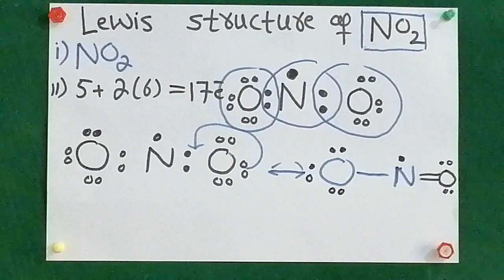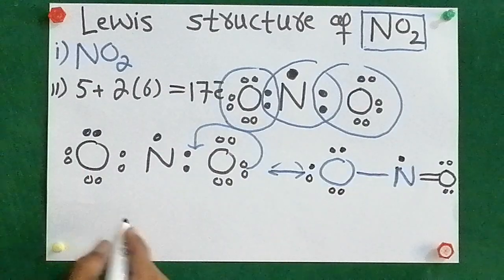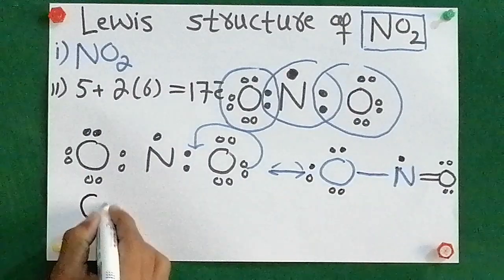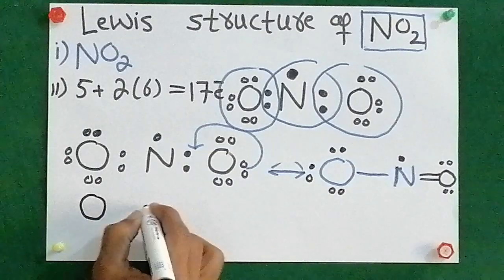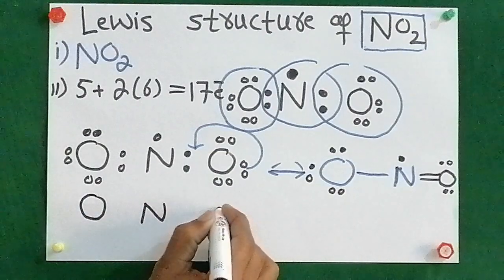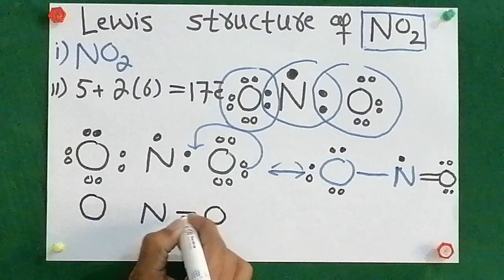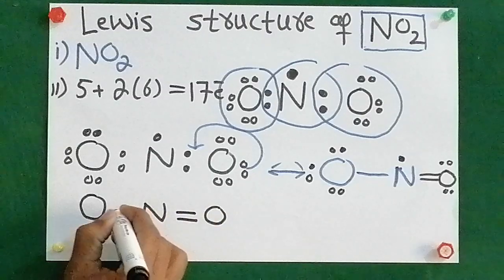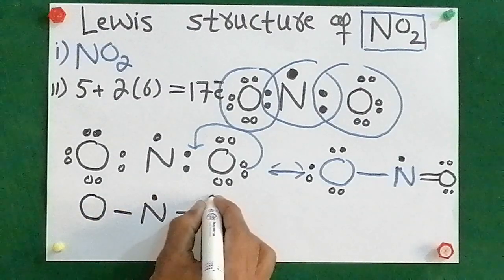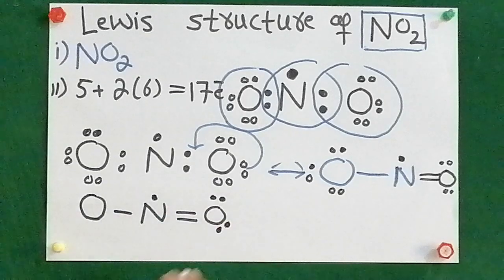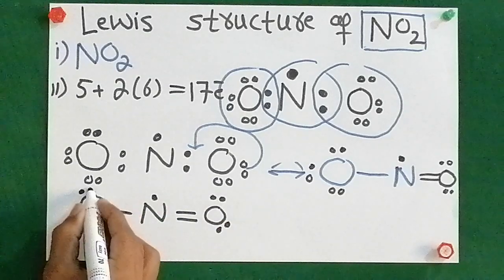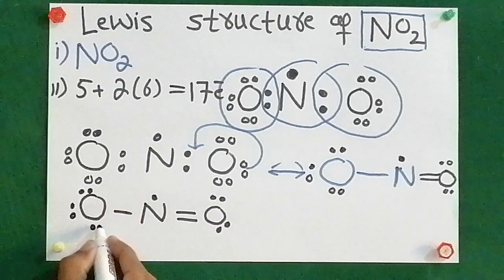Okay, this is the Lewis structure. Let me write it again: one dot on O, then O-N-O with a double bond and a single bond, one dot on nitrogen, four dots on one oxygen, and six dots on this oxygen.